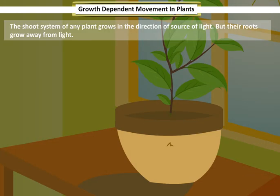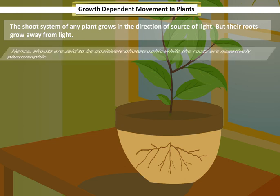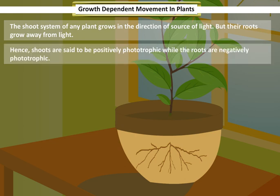The shoot system of any plant grows in the direction of the source of light, but the roots grow away from light. Hence, shoots are said to be positively phototrophic while the roots are negatively phototrophic.